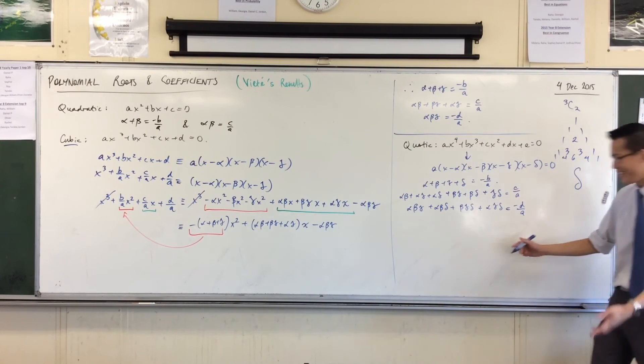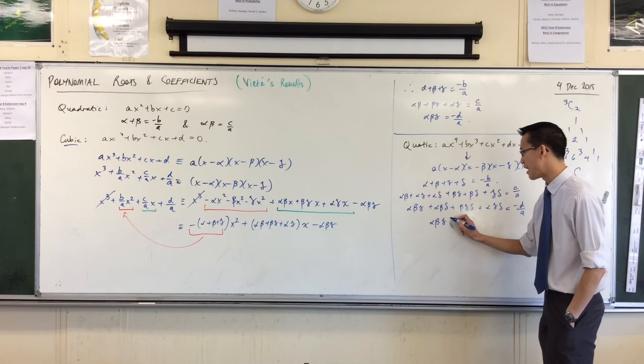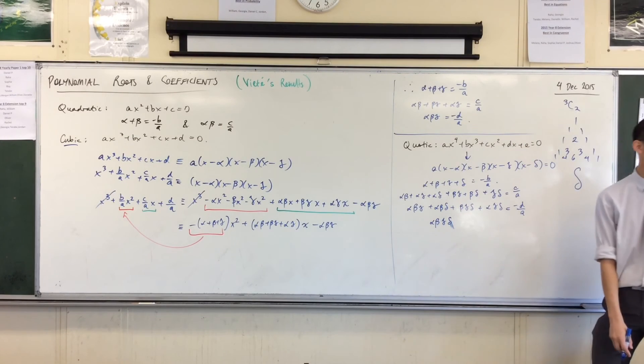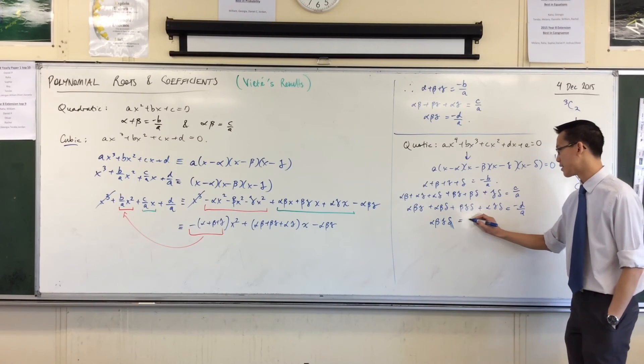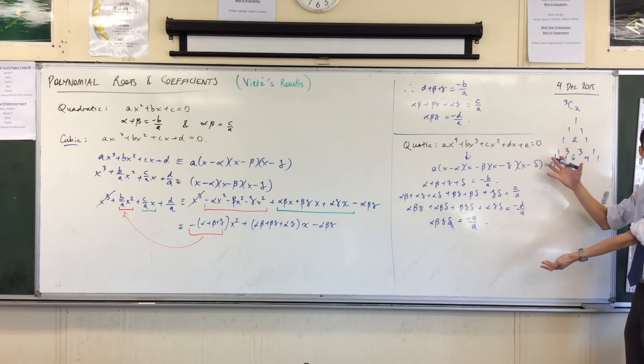Mercifully, the last one is easy to do. The sum four at a time, alpha beta gamma delta. And it's the sign alternates, and you go to the next coefficient. Done. There are the results for the quartic.